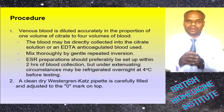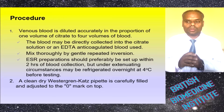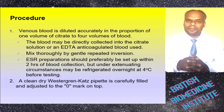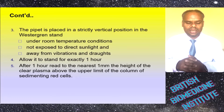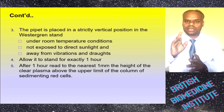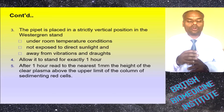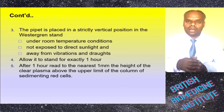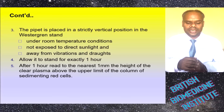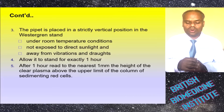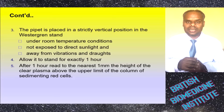A clean dry Westergren tube is carefully filled and adjusted to the zero mark at the top. The pipette is placed in a strictly vertical position in the Westergren stand under room temperature conditions, not exposed to direct sunlight, away from any vibrations or drafts. Allow the stand to remain undisturbed for exactly one hour. After one hour, read to the nearest 1 mm the height of the clear plasma above the upper limit of the column of sedimenting red cells.